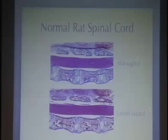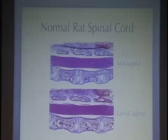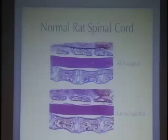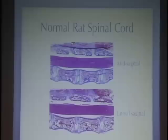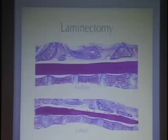A normal rat spinal cord looks like this. This is a special histological preparation — the spinal cord was cut with a bone and we had to decalcify it. It is stained with what I always thought of as the Irish stain, actually called Mallory trichrome. This trichrome stain colors all cytoplasm red, all collagen blue, and all nuclei brown. Here you can see the segments, the discs, and the dorsal part of the spinal cord where operations are usually done to expose it.